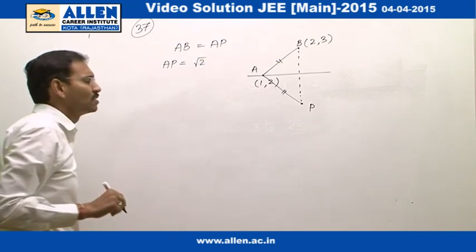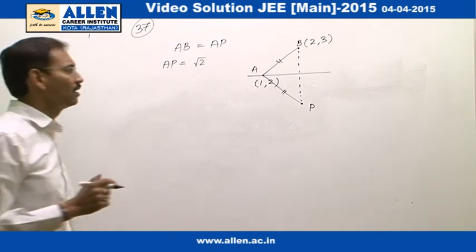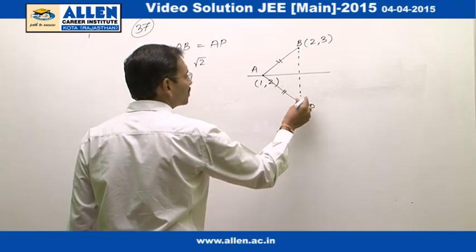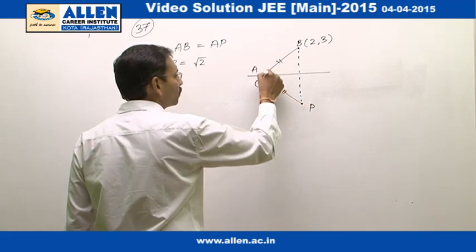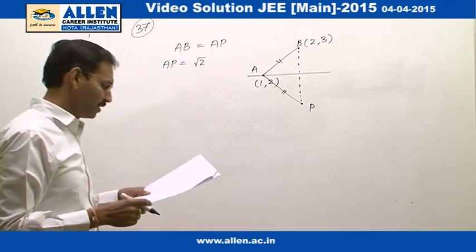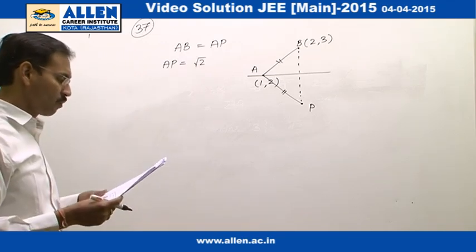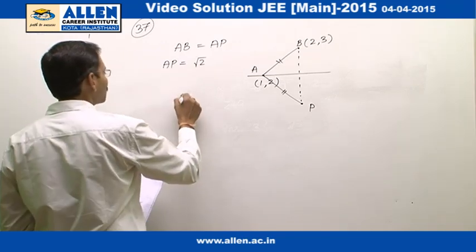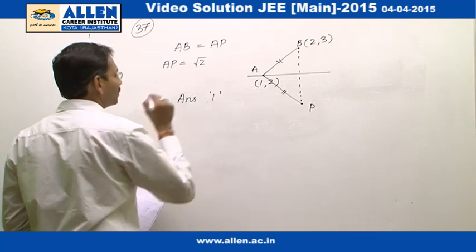It means the locus of P will be a circle whose centre is A at (1, 2) and radius is root 2. The right option is 1, so answer 1 is the right choice.